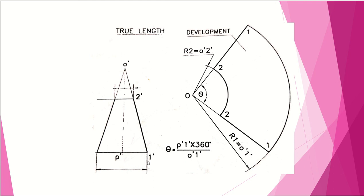Repeating the process: first draw the base diameter. As the height is given, draw a vertical line with that height. Join the two ends. Then mark the total height of the frustum on this vertical line to get the frustum portion. Draw the cut line. Then measure radius O'1', draw O1 with the same radius, and compute theta. Theta equals P'1' into 360, divided by O'1'.